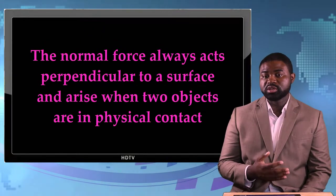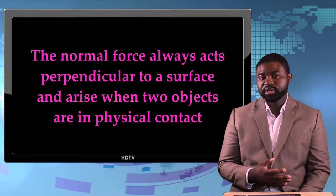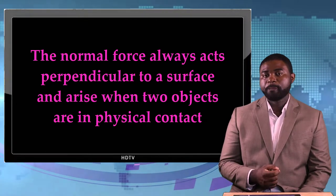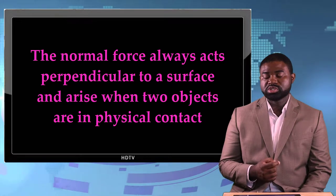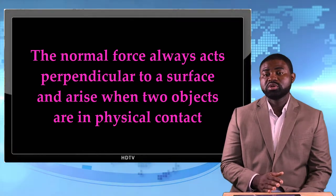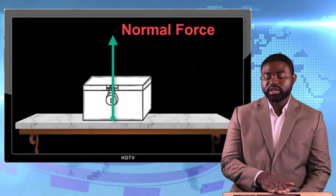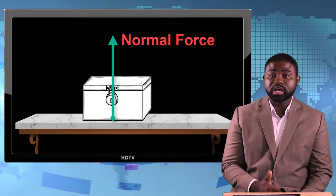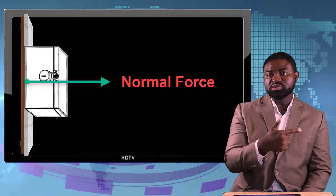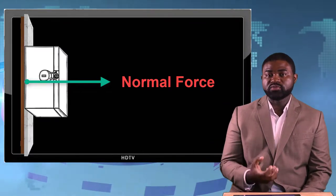The normal force has a magnitude and a direction. Keep in mind that the normal force always acts perpendicular to the surface — perpendicular meaning at right angles. So if the surface is flat, the normal force will act upwards on the object sitting on it. On the other hand, if the surface itself is vertical, the normal force will act in the horizontal direction. It is always at right angles.